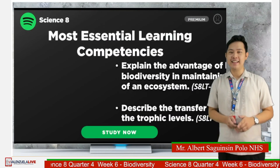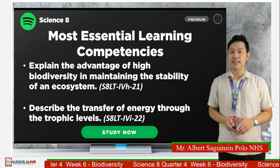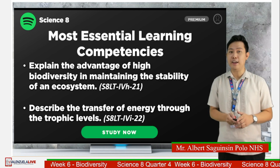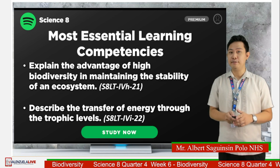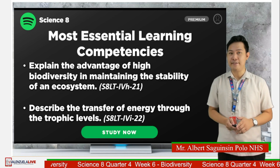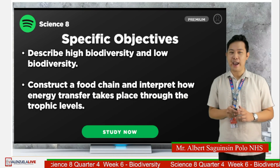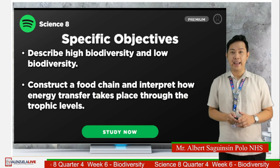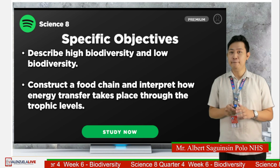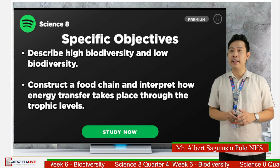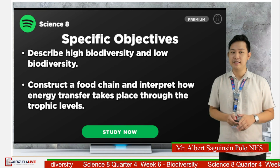For today's lesson, you will learn to explain the advantage of high biodiversity in maintaining the stability of an ecosystem and describe transfer of energy through trophic levels. Specifically, you will learn to describe high biodiversity and low biodiversity, construct a food chain, and interpret how energy transfer takes place through the trophic levels.